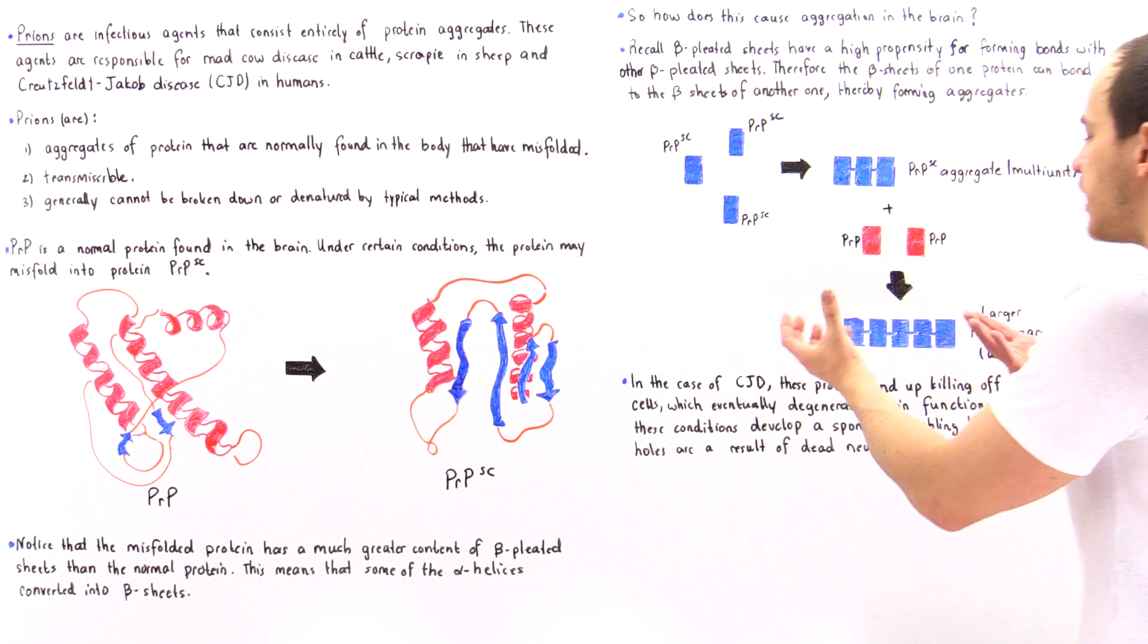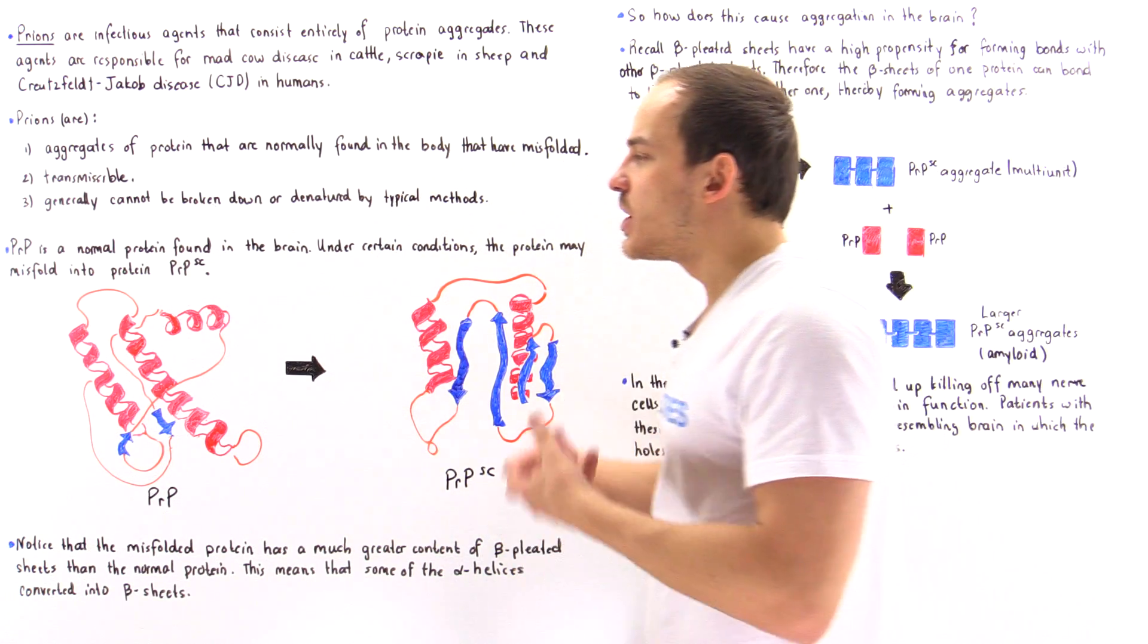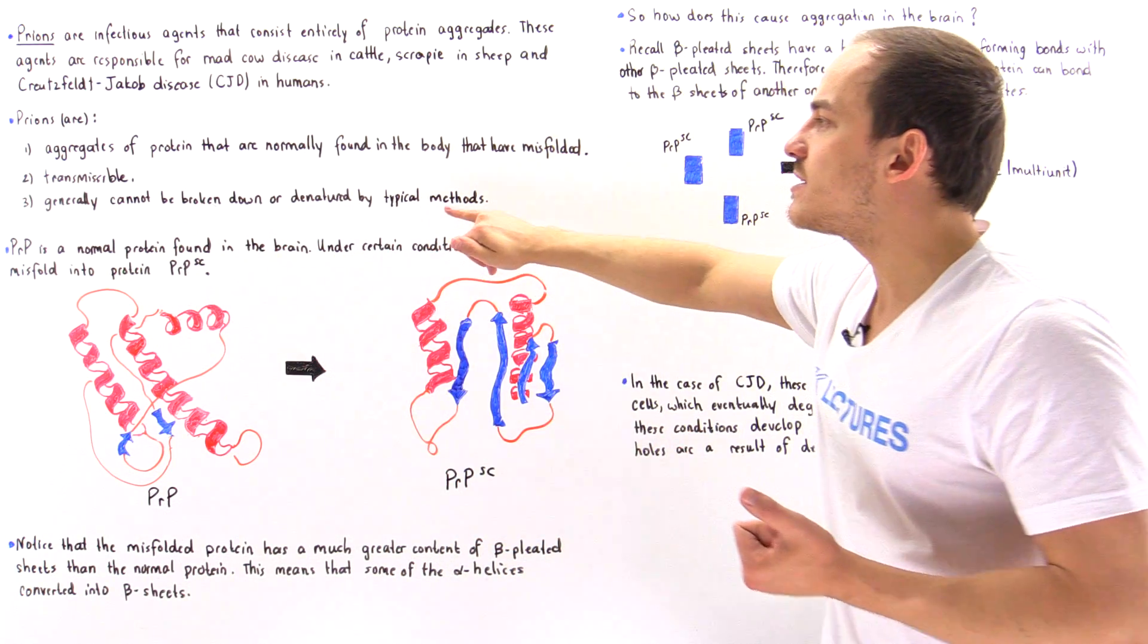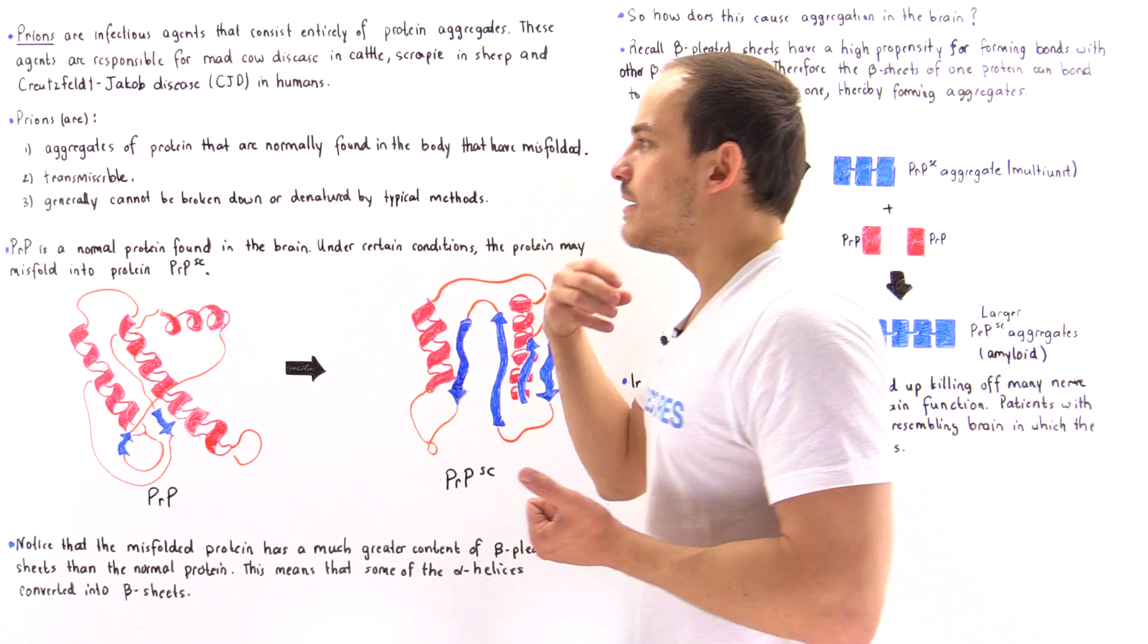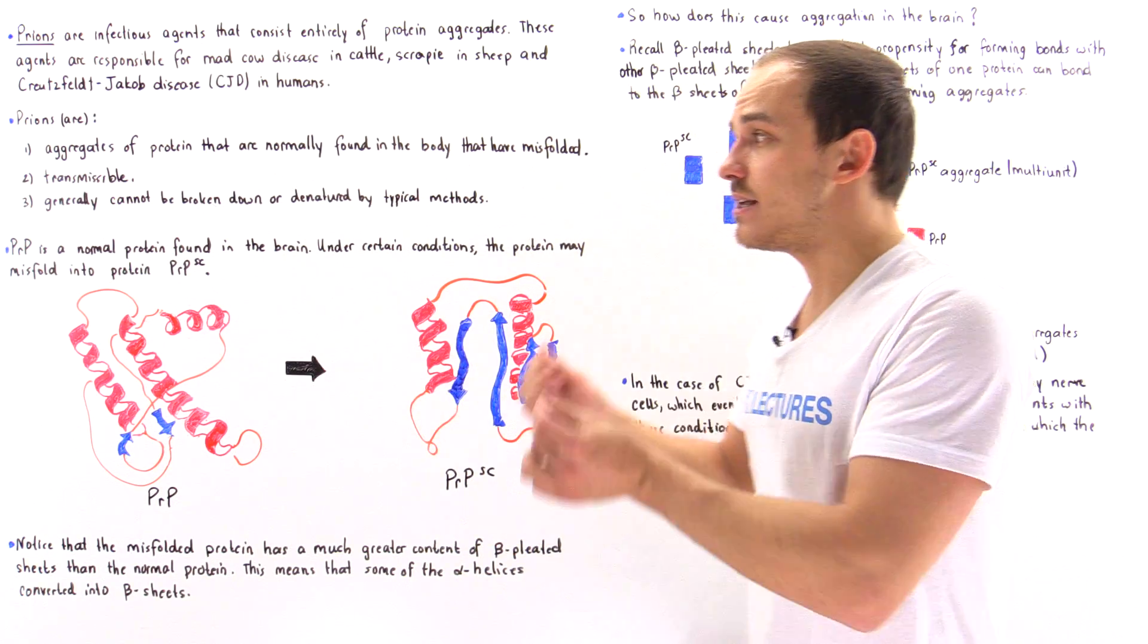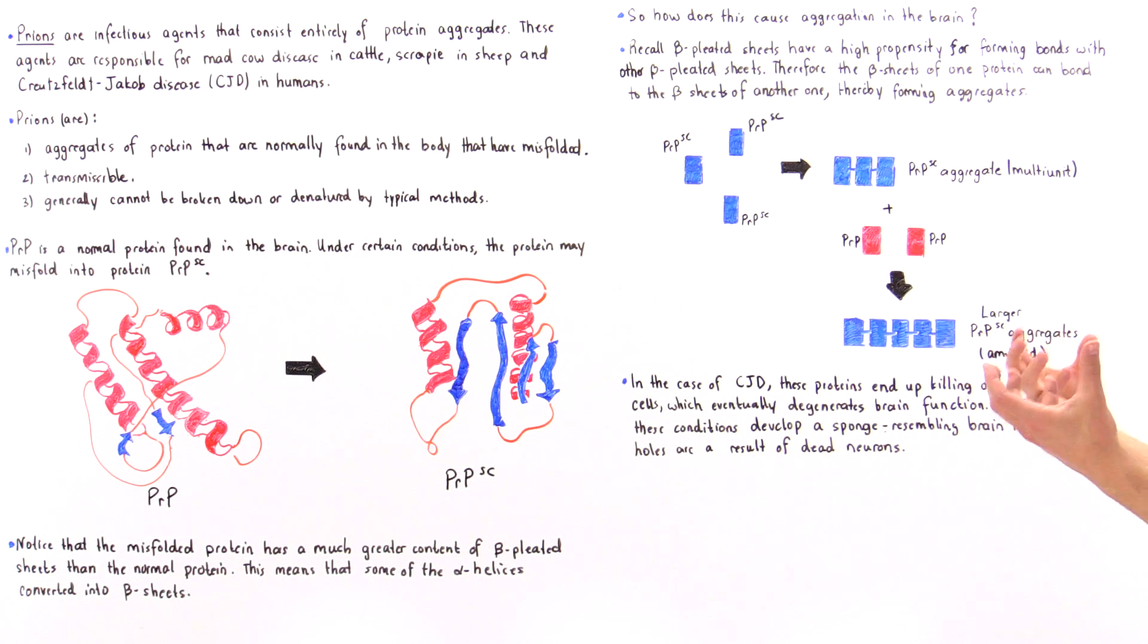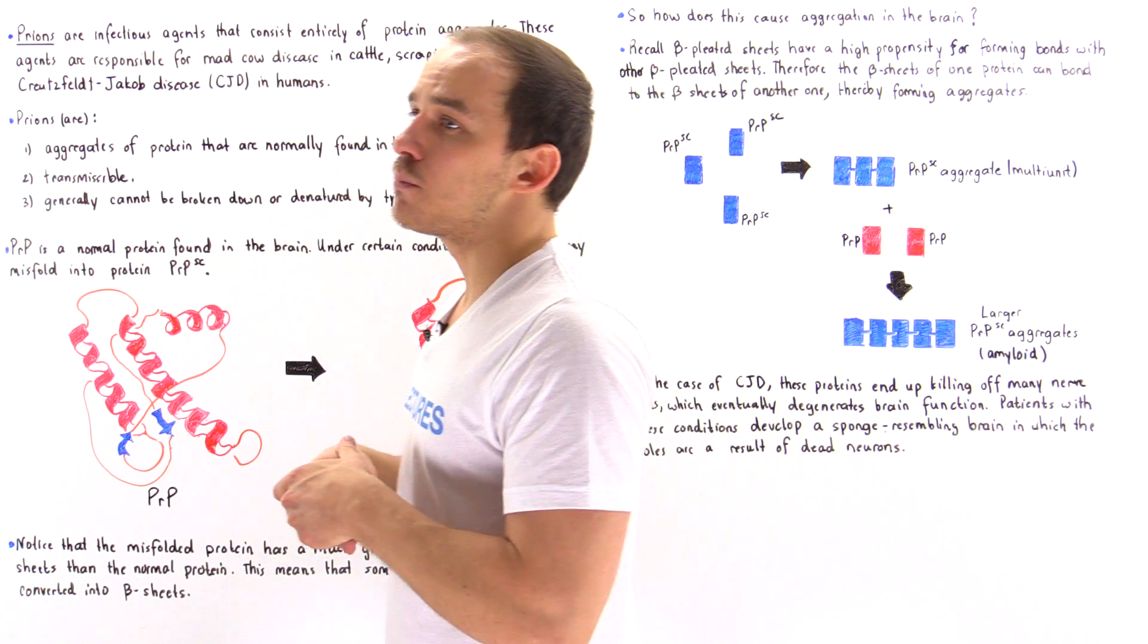Eventually they form even larger aggregates. Because they cannot be broken down by the cells of our body by the same methods, they will affect the efficiency and different functions that take place in our cells. The cells in this case are the brain cells, the nerve cells found inside our brain. Eventually that will kill off many nerve cells in our brain.